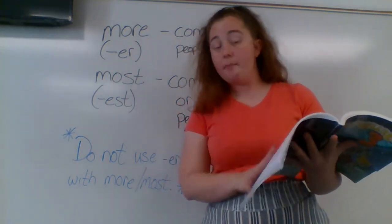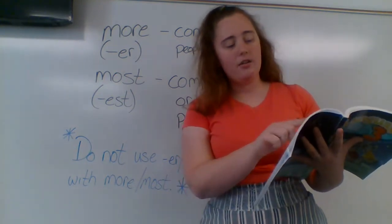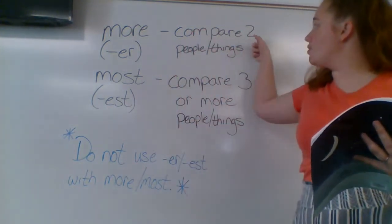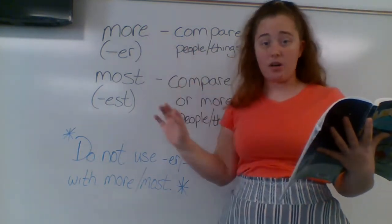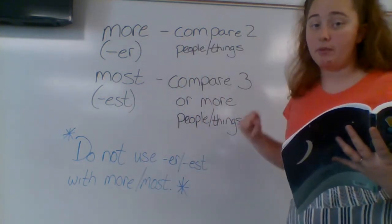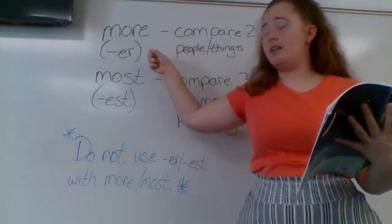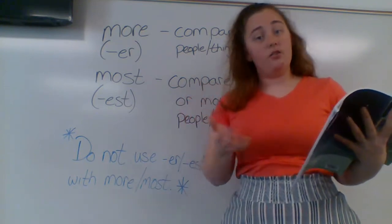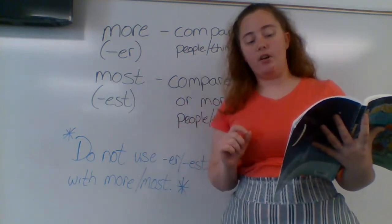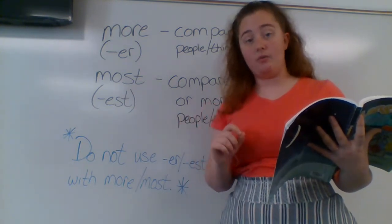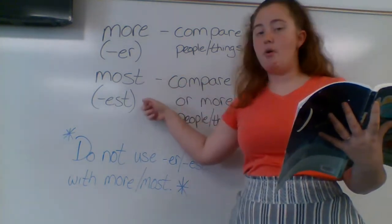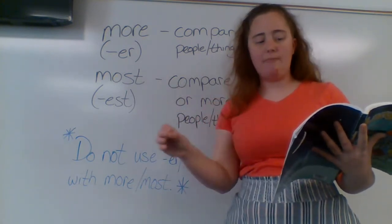Let's go ahead and take a look at the book, page 155. It says: use the word 'more' before a long adjective when comparing two nouns. So right here, it says compare two people or things — that's when we're using 'more' or that ER ending. More just kind of takes the place of that ER ending, and that's when we're comparing two people or things. And it says: use the word 'most' before a long adjective when comparing three or more nouns. When we compare three or more people or things, we use 'most' or that EST ending.